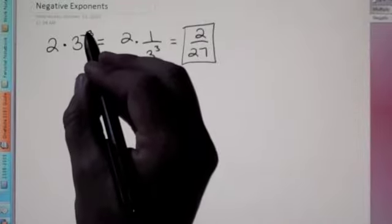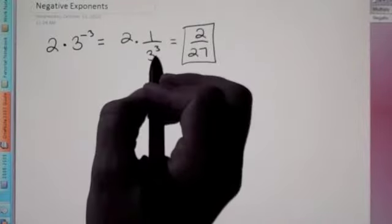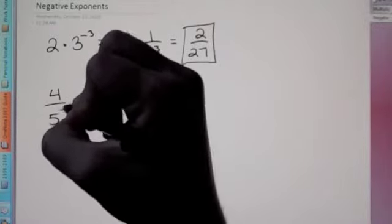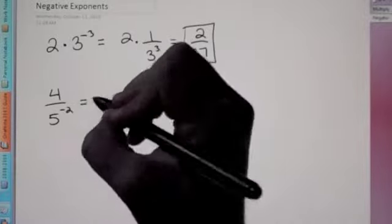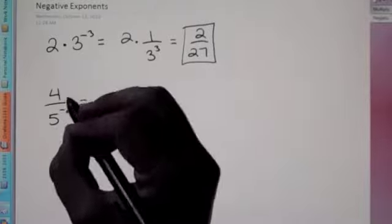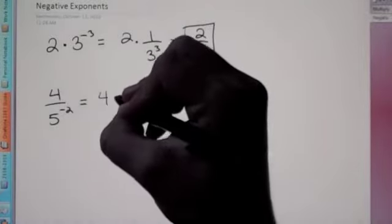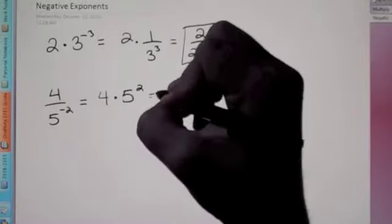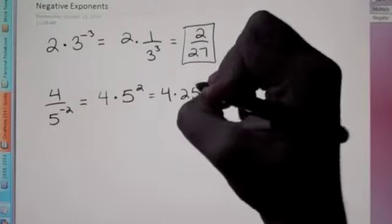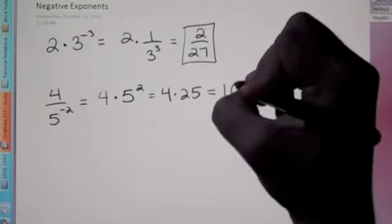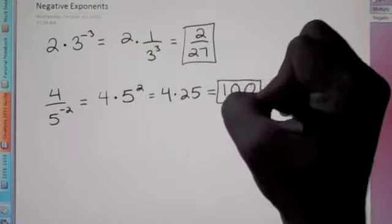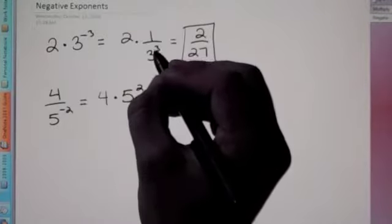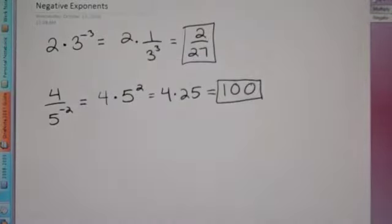If you have a negative exponent in the numerator, just switch it to the denominator, and vice versa. For example, 4 over 5 to the negative 2: the 4 is not connected to the negative exponent, so don't move the 4. We just move the 5 up to the numerator and make it a positive 2. This gives us 4 times 25, because 5 squared is 25, so the answer is 100. Negative exponent in the denominator? Move it to the numerator to make it positive. Only move what's connected to the negative exponent.